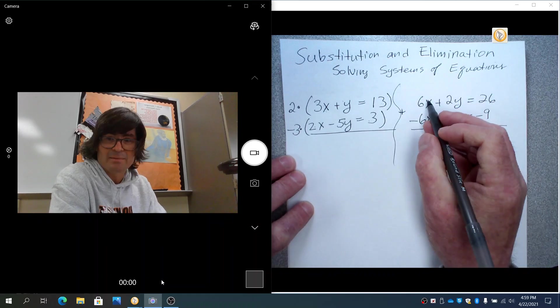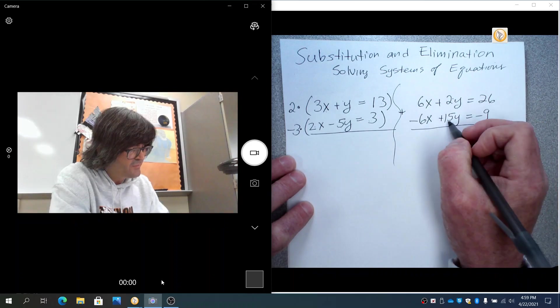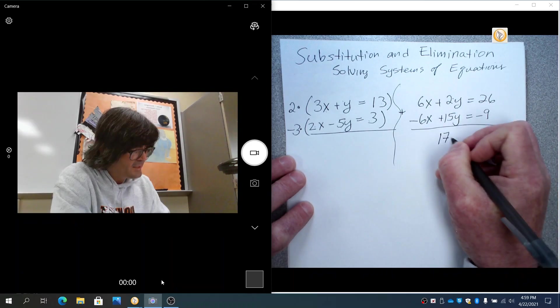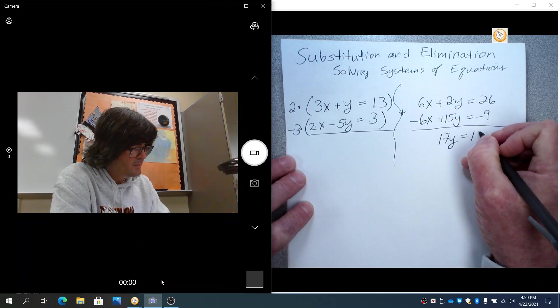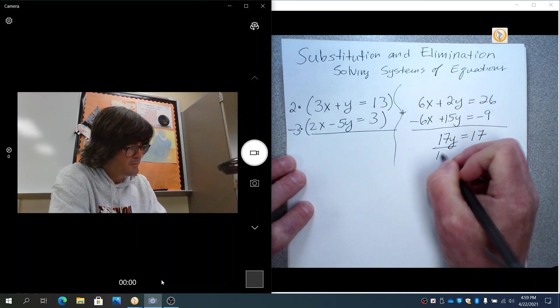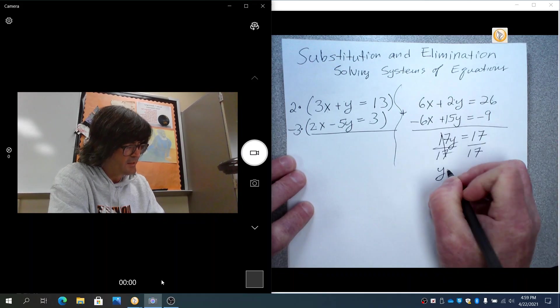And 6x and minus 6x cancel out. They add to 0. 2y and 15y add to 17y. 26 and minus 9 makes 17. Divide by 17 to cancel out that, and you get y equals 1.